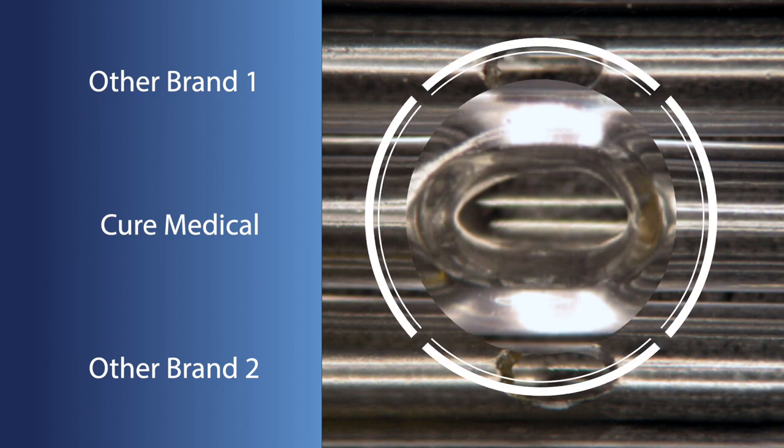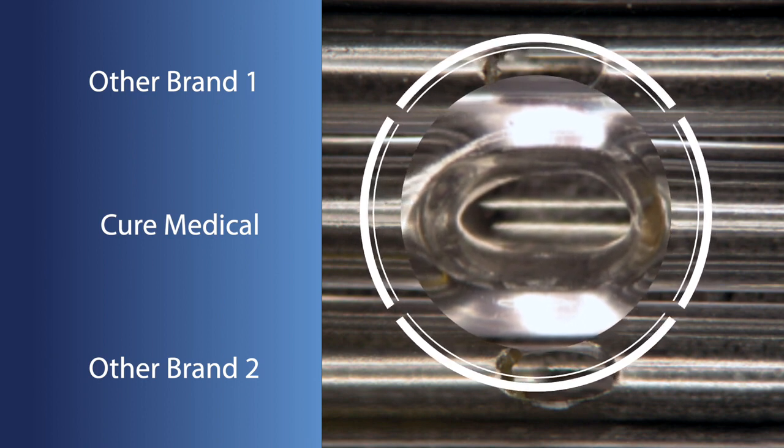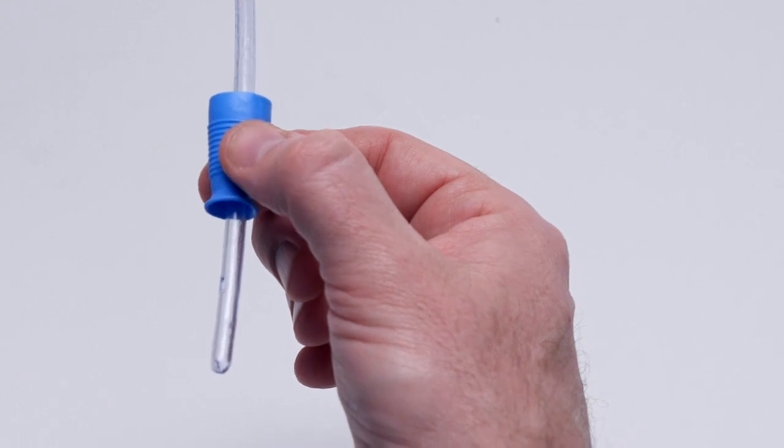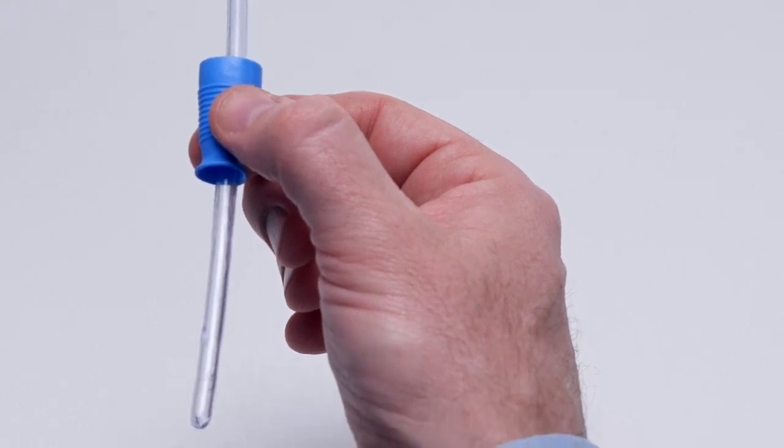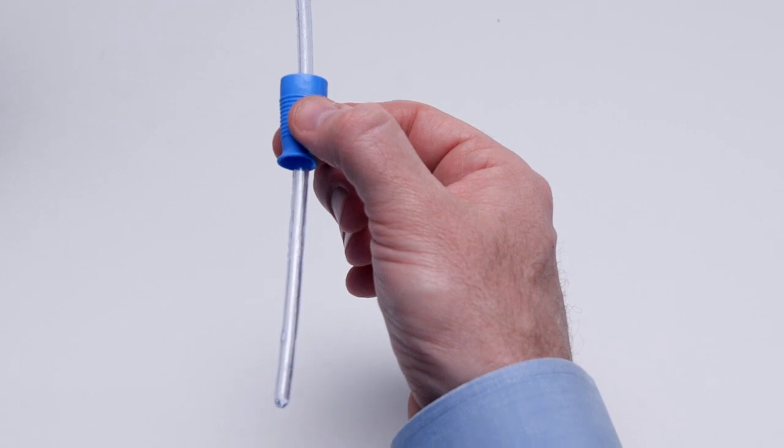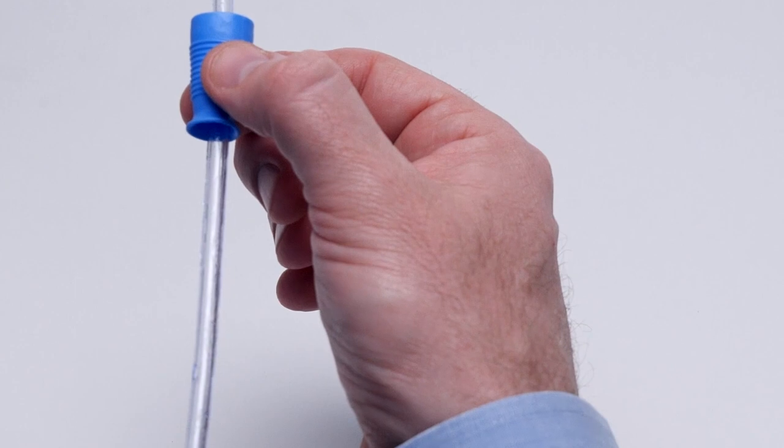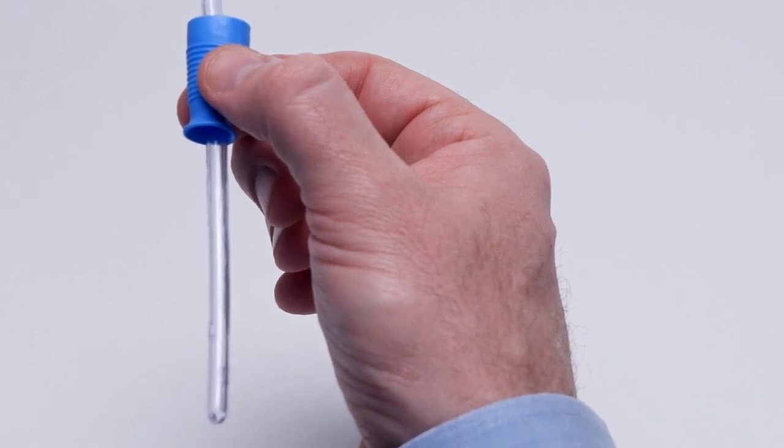Using the gripper, insert the pre-lubricated Cure Ultra into the body. Gently slide the catheter into the bladder until urine begins to flow. When the bladder is empty, simply remove and dispose of the catheter.